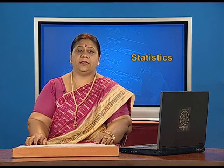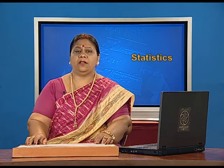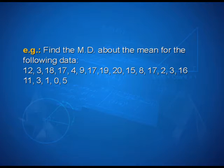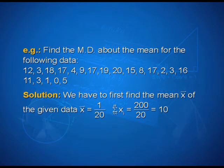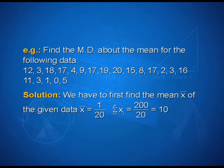Instead of carrying out the steps every time, we can carry on calculation stepwise without referring to steps. Let us solve another example. Find the mean deviation about the mean for the following data: 12, 3, 18, 17, 4, 9, 17, 19, 20, 15, 8, 17, 2, 3, 16, 11, 3, 1, 0, 5. We have to find the mean x̄ = (1/20) × Σxi = 200 / 20 = 10.